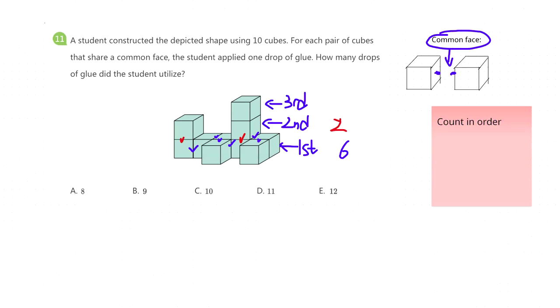And let's move to the third layer. How many common faces can you find? We have one. So the next step is just add these numbers together. We have six plus two plus one, which is equal to nine.